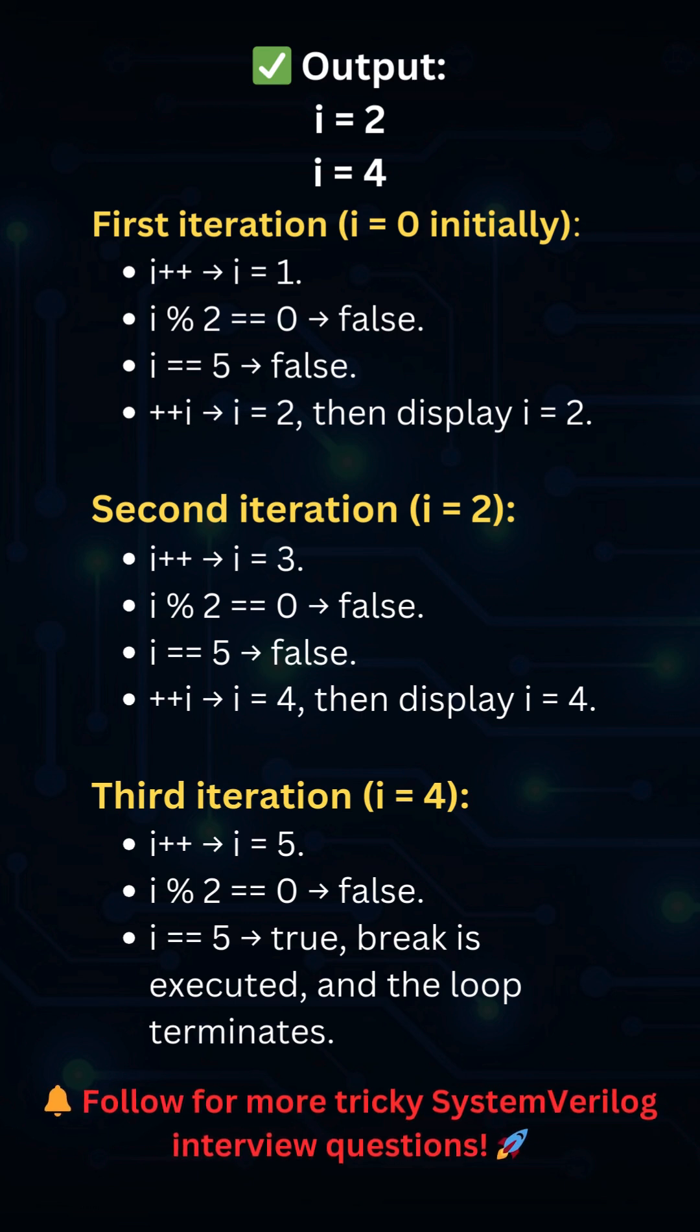Since it's odd, the first if condition is not satisfied. i == 5 is false. Then ++i makes i = 2 and it's displayed.